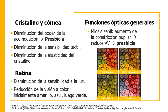En cuanto a la retina, habrá disminución de la sensibilidad a la luz y reducción de la visión a color por pérdida de conos, inicialmente al amarillo y al azul, luego al verde. Recordemos que la deuteranomalía es la no percepción del color rojo, la tritanopía es la no percepción del azul y el amarillo, y la protanopía es la pérdida de la sensibilidad al color rojo. Esto ya se va a ver en algunos adultos mayores.